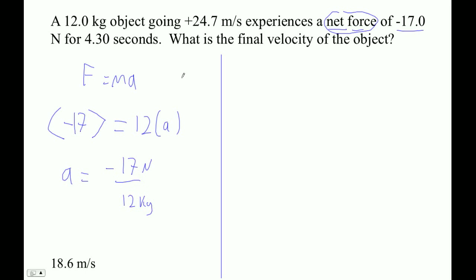Okay, so let's see, 17 divided by 12, that comes out to negative 1.416 meters per second squared.